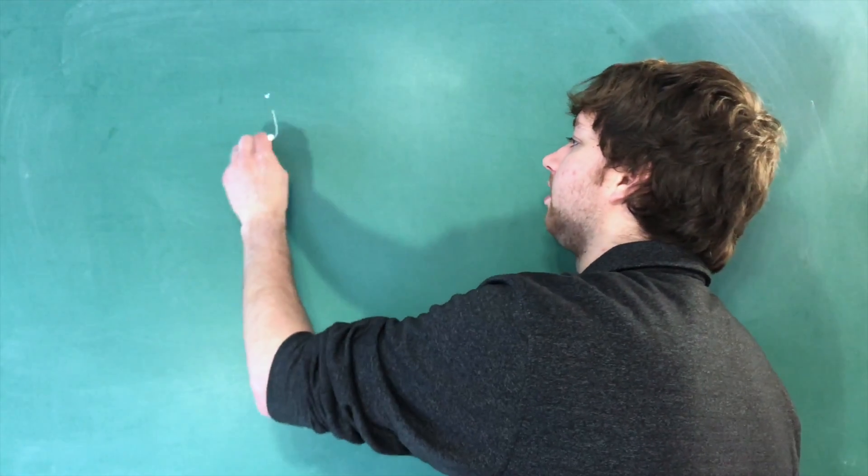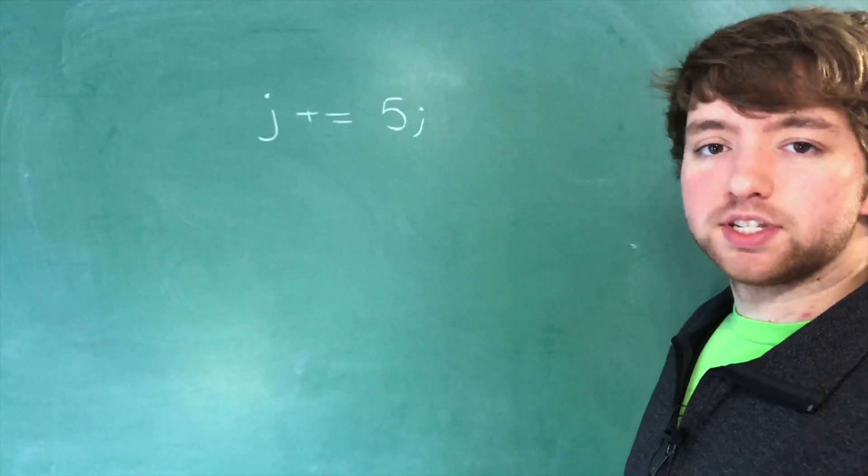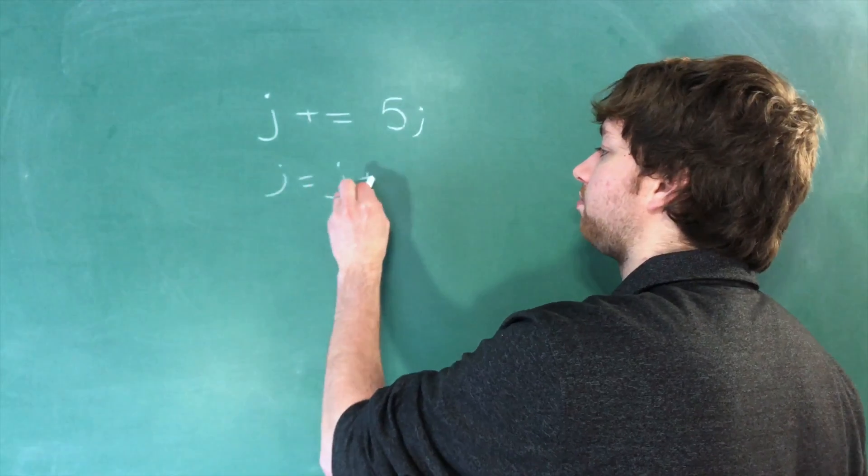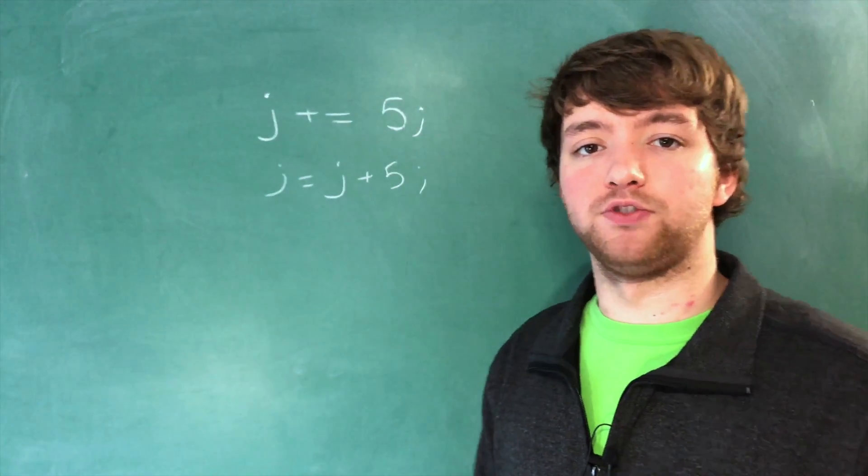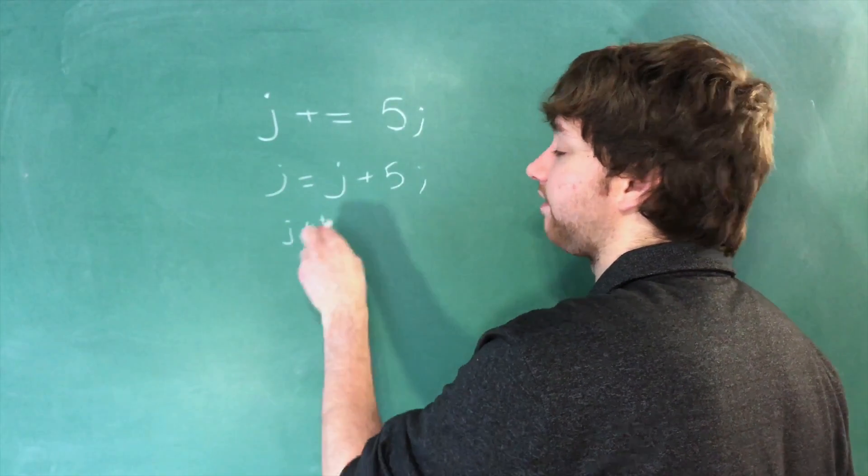Okay, next question: what does this mean if we have j+=5? Well, this is actually like doing this: j = j + 5. It's going to add 5 to whatever the value of j is, or you can think of it as going j++ 5 times.